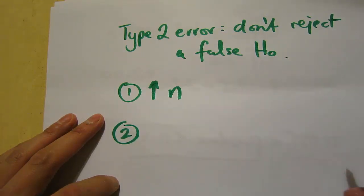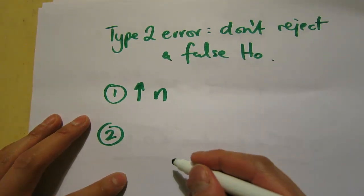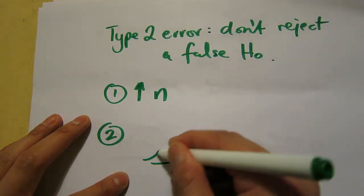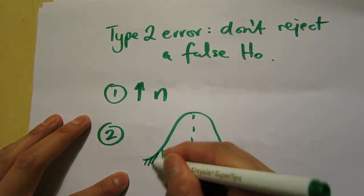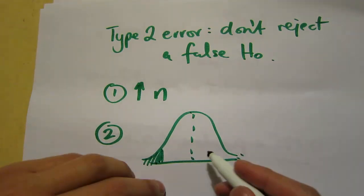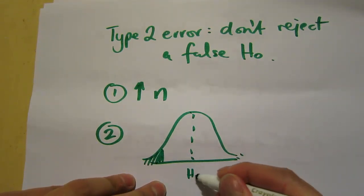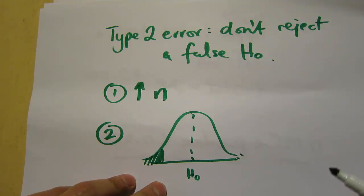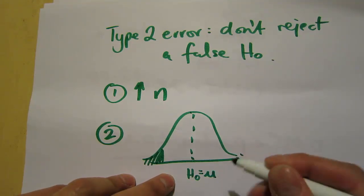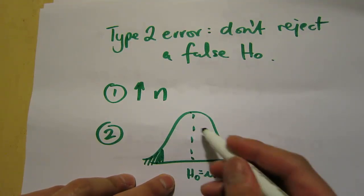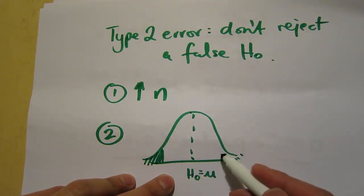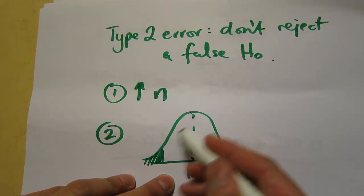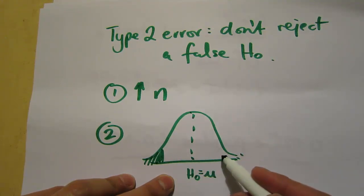The second one is to think of the nature of a type 2 error. So suppose this is our test, and let's imagine it's a lower-tail test. And so this is a false null hypothesis. So this means this area here is when we do not reject our false null hypothesis. We want to minimize this region, right? We want to minimize the chance that we do not reject a false null hypothesis.